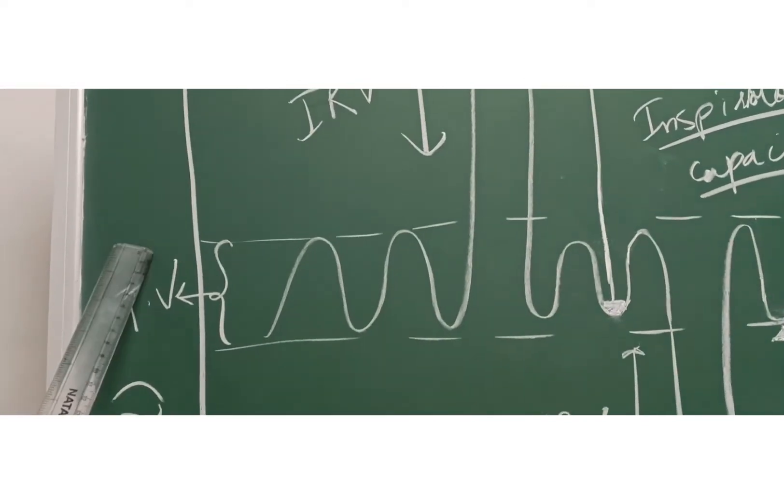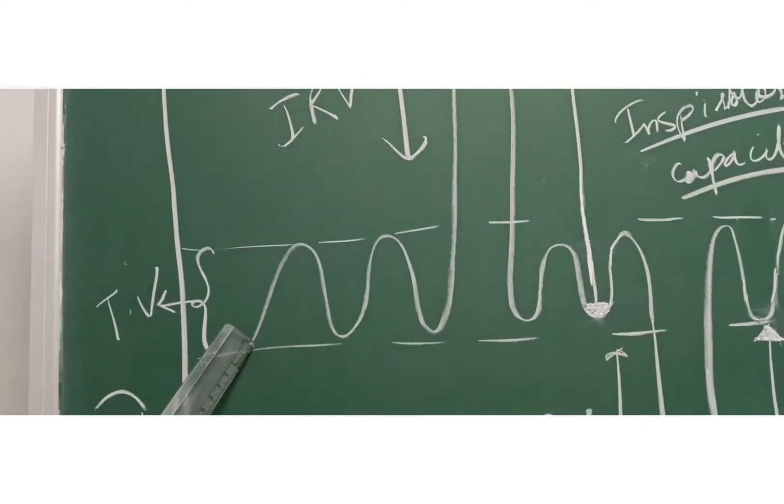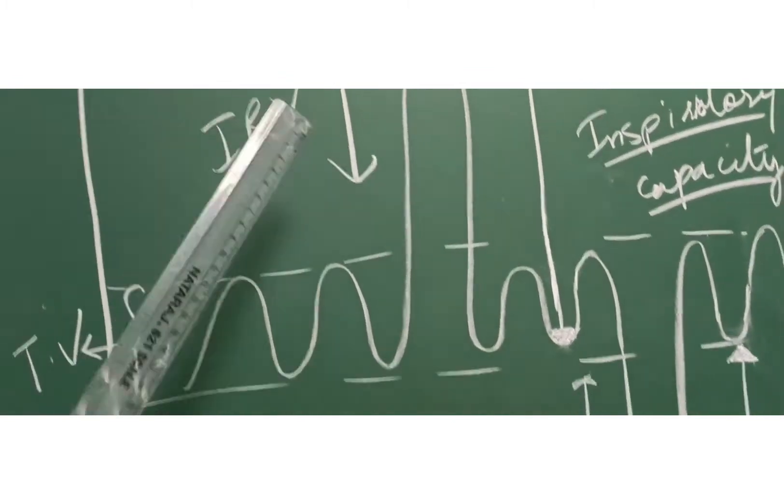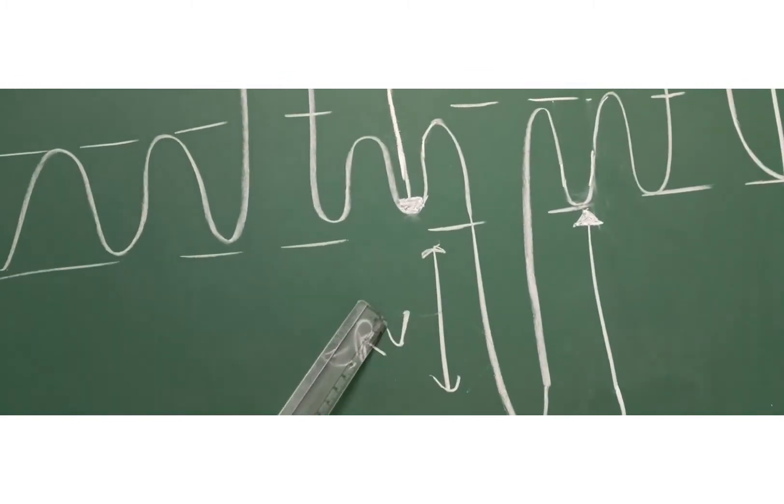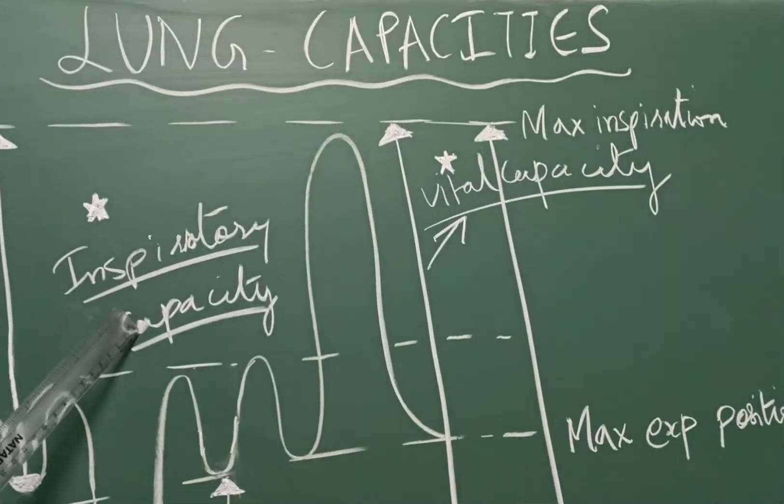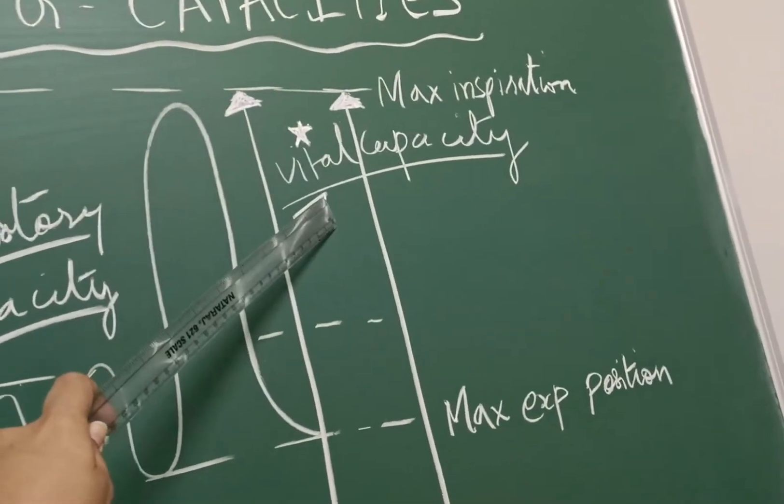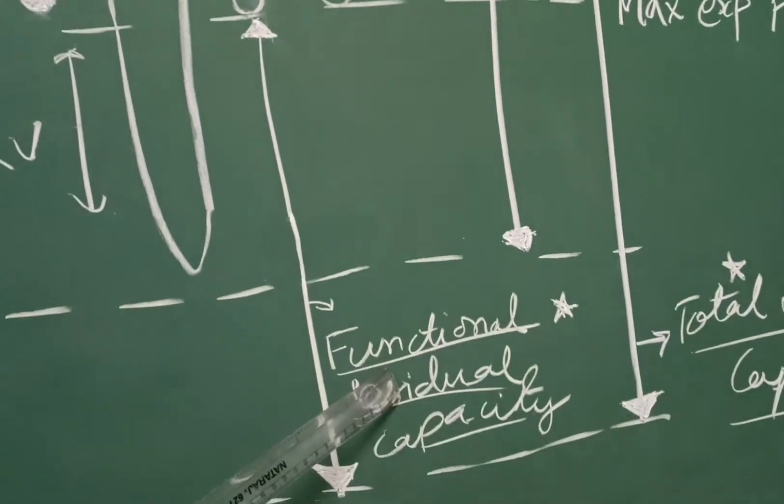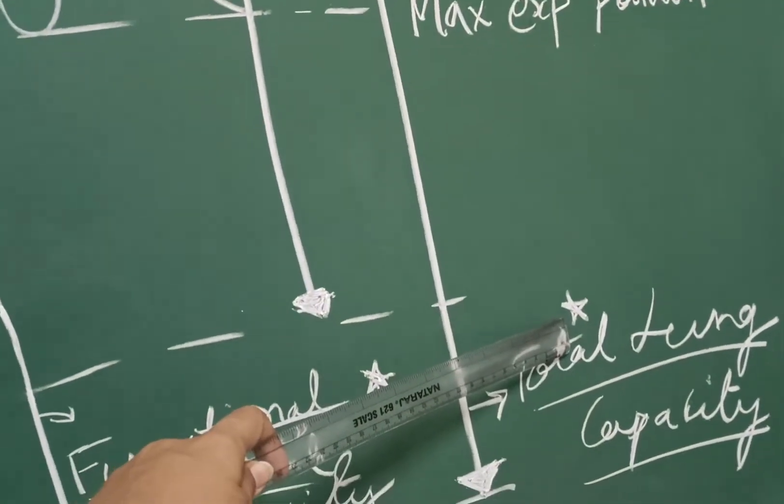We have already seen what is the meaning of tidal volume, what is inspiratory reserve volume, what is expiratory reserve volume and residual volume. So there are 4 types of capacity: inspiratory capacity, vital capacity, functional residual capacity and total lung capacity.